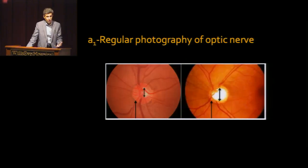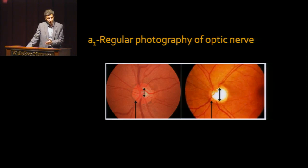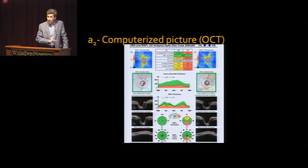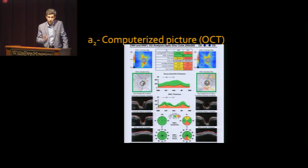Regular photography consists of routine pictures taken from the back part of the eye. In follow-up examinations, we compare the latest photo with the previous one, and the first one serves as a baseline picture. The OCT is a unique machine, different from regular photography — it measures the thickness of the nerve fiber layer in the back part of the eye and compares the reading with a database.